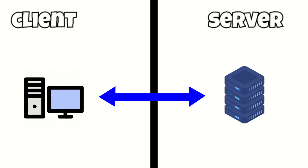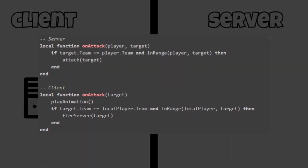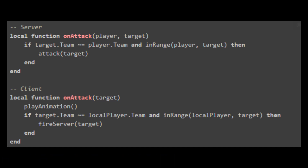Exploiters can use a while loop to run a remote event infinite times. Here we have an example to secure a kill-player exploit in an FPS game. In this simple example we double-check if the player has to be killed. We check it on both client and server side because the client side is not always safe and can be bypassed by exploiters.